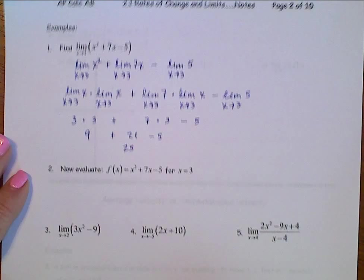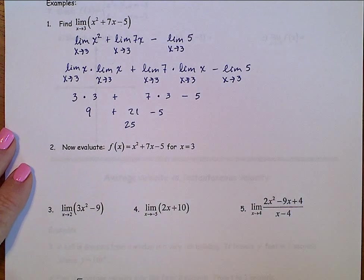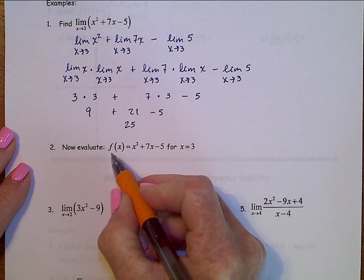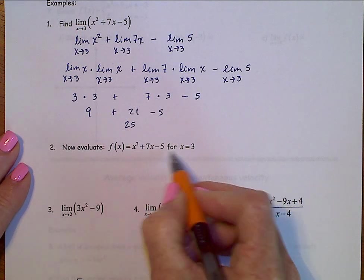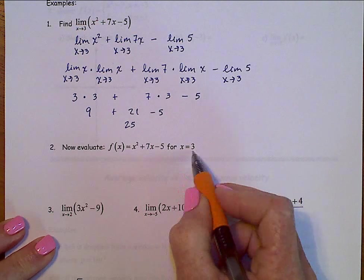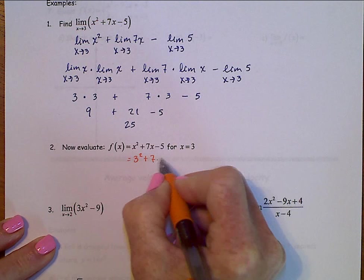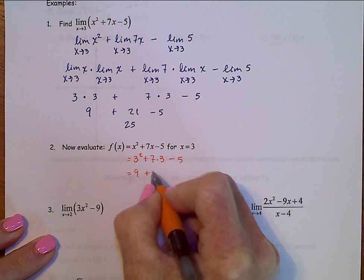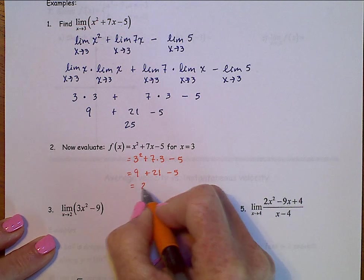Alright, let's take a side trick here for a minute, and let's just go back and look at this. If f of x is x squared plus 7x minus 5, evaluate that for x equals 3, that says just plug in the 3: 3 squared plus 7 times 3, minus 5, 9 plus 21, minus 5, 25.